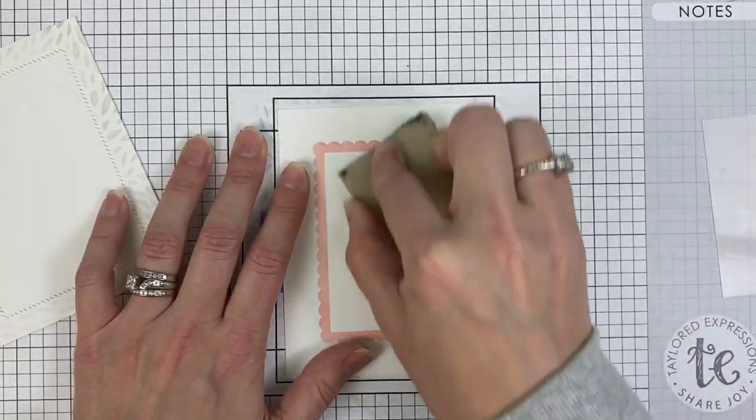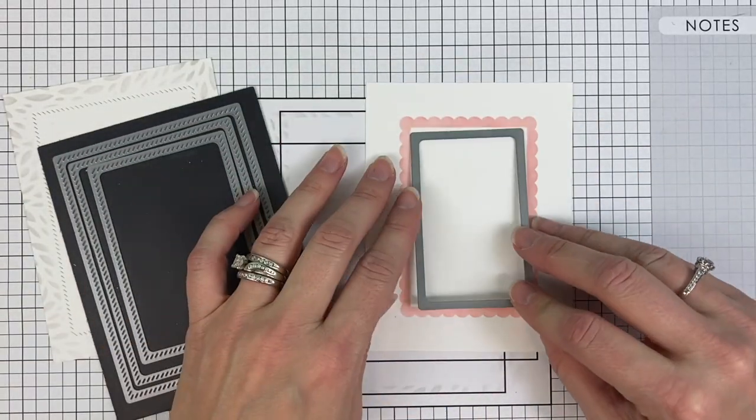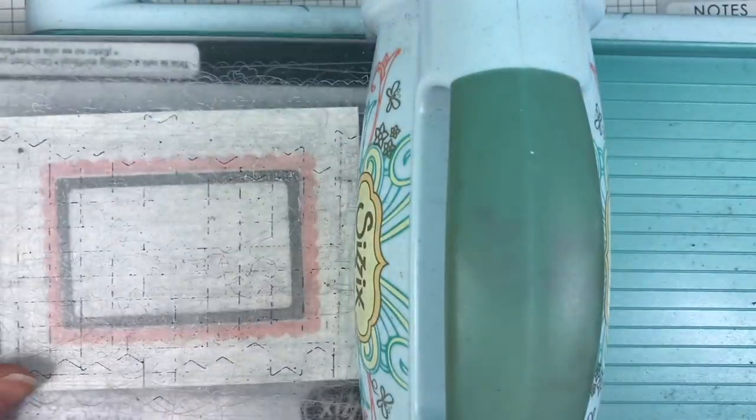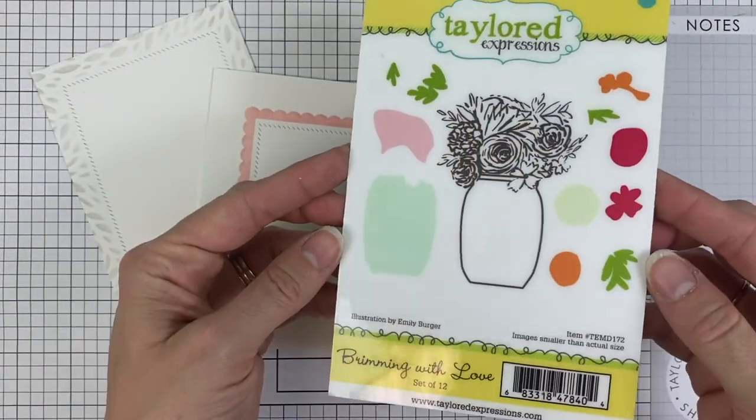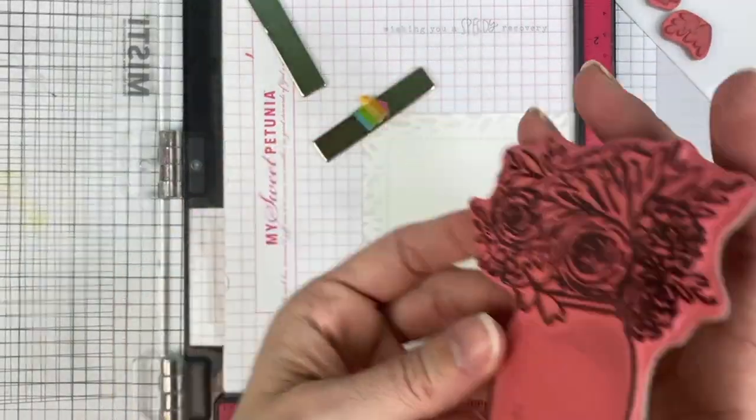Again, using that adhesive square remover if you have any little bits of Pixie Spray left behind. Now I'm grabbing the smallest of the diagonal rectangle stitch stacklets and placing that inside the frame to create that extra texture and dimension while still leaving my card as a one-layer card.